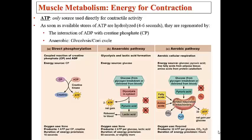In order for muscles to contract, they need a steady supply of ATP. ATP is used by myosin to form cross bridges and also to detach cross bridges, so ATP is our only source used directly for contractile activity. What's really amazing is that there is only four to six seconds worth of ATP already located in the muscle, so there have to be other ways to immediately generate energy.